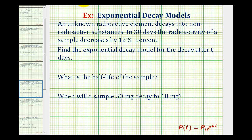To model this situation we're going to use the exponential growth and decay function p(t) = p₀ · e^(kt), where p₀ is the initial amount, k is the decay rate and because we have decay k should be negative, t is the time in days, and p(t) is the remaining amount of radioactive substance after t days.